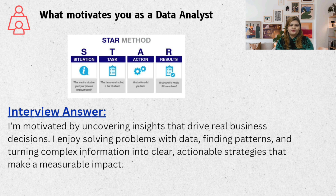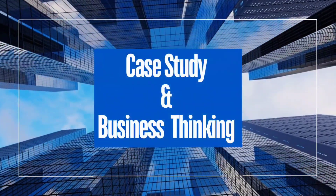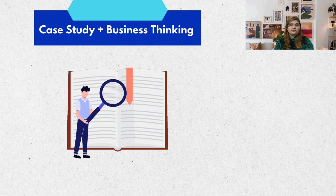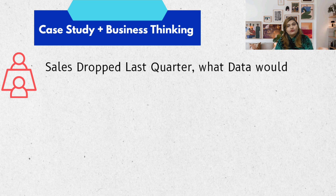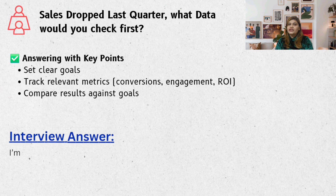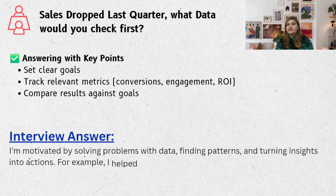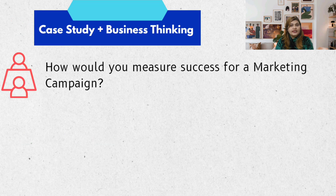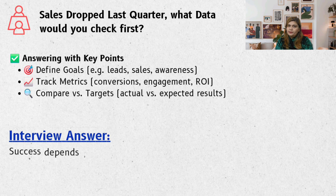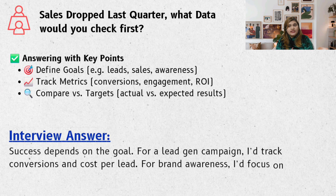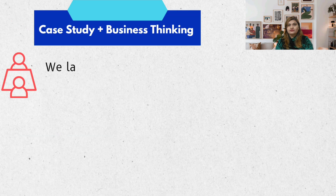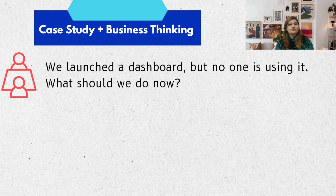The next section is about how you think — can you use data to solve a real business problem? For example: sales dropped last quarter — what data would you check first? Break it down by product, region, and time period, and try to spot what changed. How would you measure success for a marketing campaign? Did people click? Did they buy? Was it worth the money spent? Think like a marketer with a data lens.